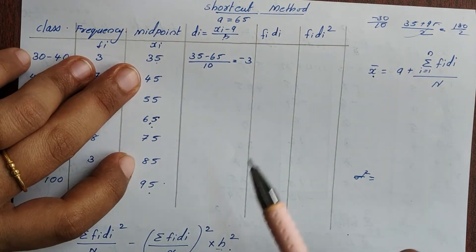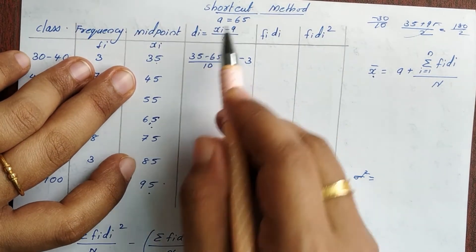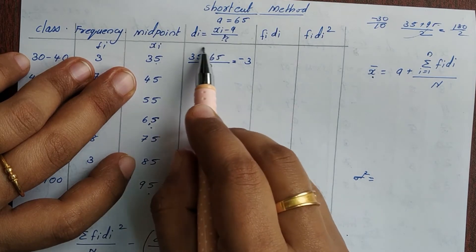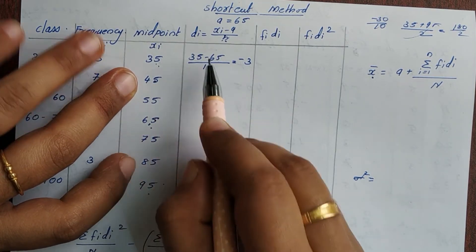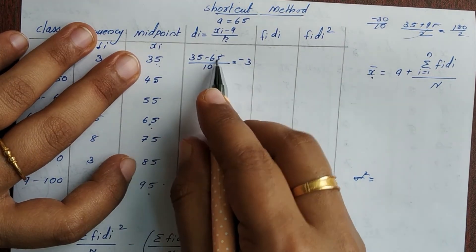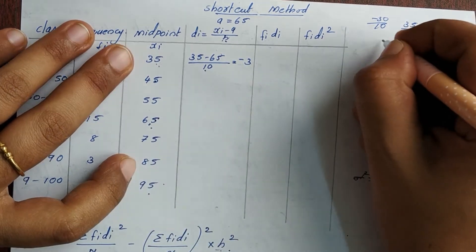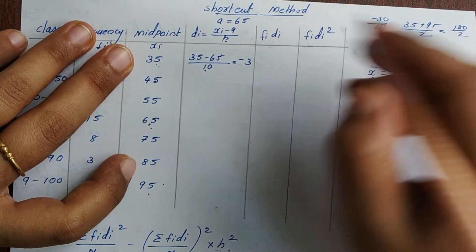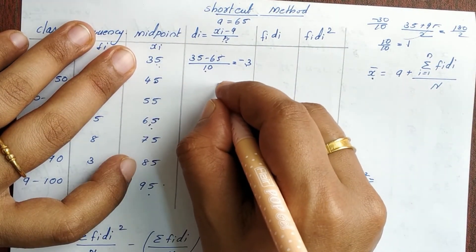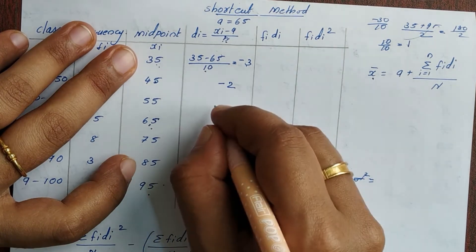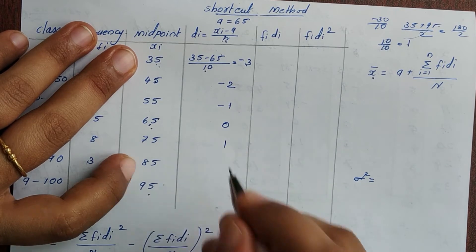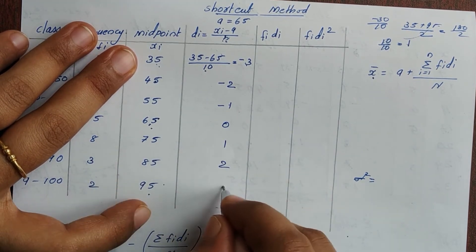Since h equals 10, each step increases di by 1. So the di values are: minus 3, minus 2, minus 1, 0, 1, 2, 3.